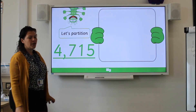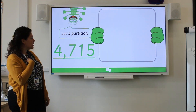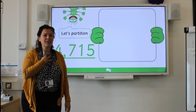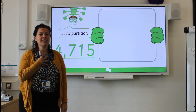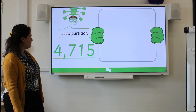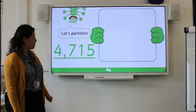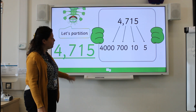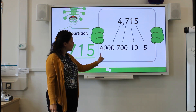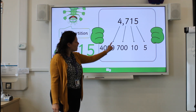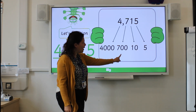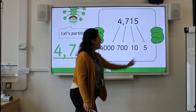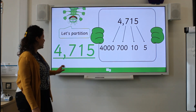I hope you're ready to try some yourself. Off you go — let's partition four thousand seven hundred and fifteen. Off you go! Let's check your work: you should have four thousand, seven hundred, ten, and five — which make the number 4715.